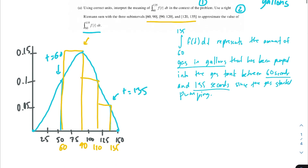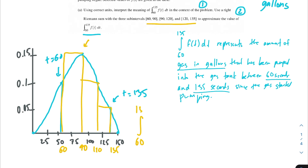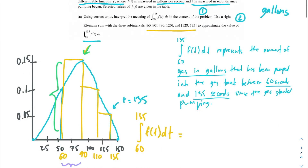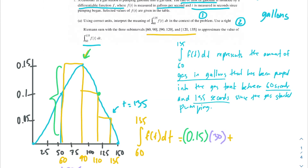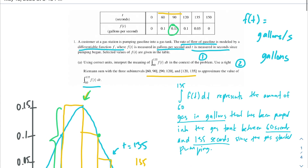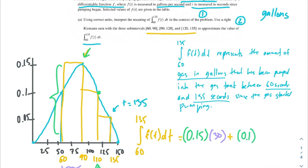So the integral from 60 to 135 of f of t dt equals — how do we find the area of a rectangle? We take its base and multiply it by its height. For the first rectangle, since we're using the right Riemann sum, the height is f of 90, which is 0.15. The base is the difference between 90 and 60, which is 30. For the second rectangle, the height is f of 120, which is 0.1, times the base from 120 to 90, which is also 30.